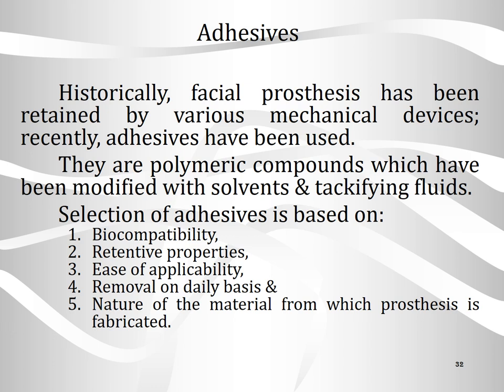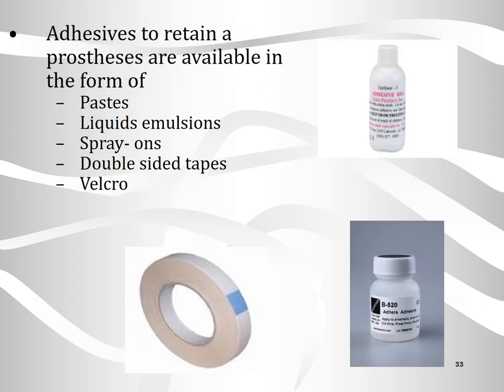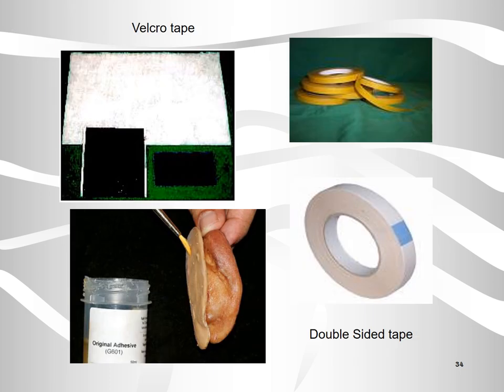Coming to adhesives, historically facial prostheses have been retained by various mechanical devices. Recently, adhesives have been used. They are polymeric compounds which have been modified with solvents and other fluids. Selection of adhesives is based on biocompatibility, retentive properties, ease of applicability, removal on a daily basis, and the nature of the material from which the prosthesis is fabricated. Adhesives to retain a prosthesis are available in the form of paste, liquid emulsions, spray, double-sided tapes, and velcro, as you can see in the photos.